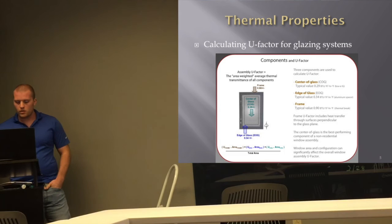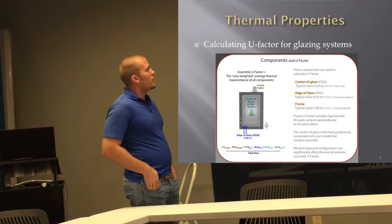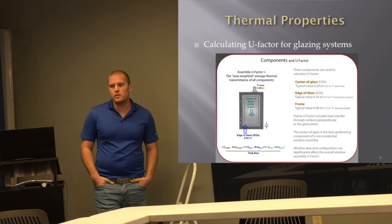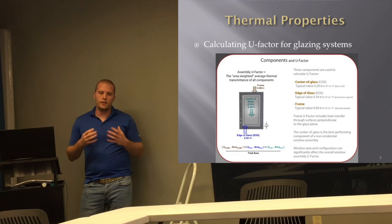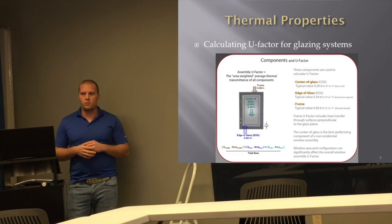The U-value is not unitless — it's BTU per square foot per hour per degree Fahrenheit. Solar heat gain coefficient is unitless, and condensation resistance gets a unitless rating in Window. The U-value is the only one with units, and it's basically the inverse of an R-value, so if you're more familiar with R-value, it's just the inverse of that.